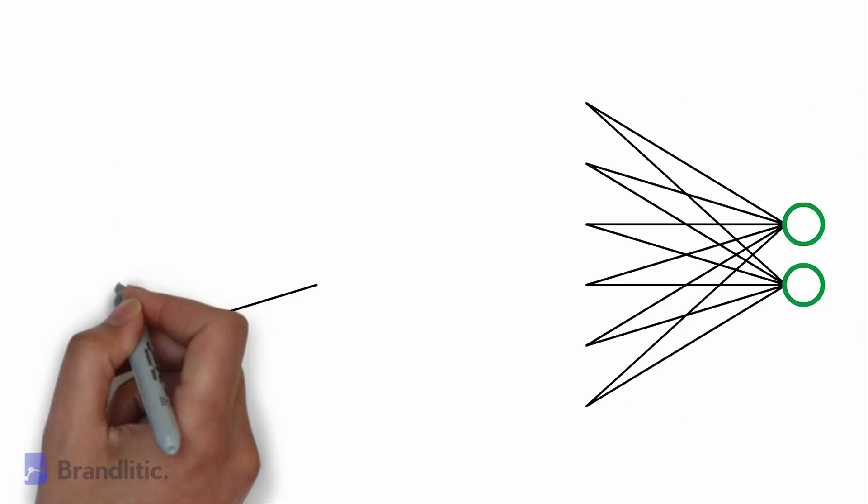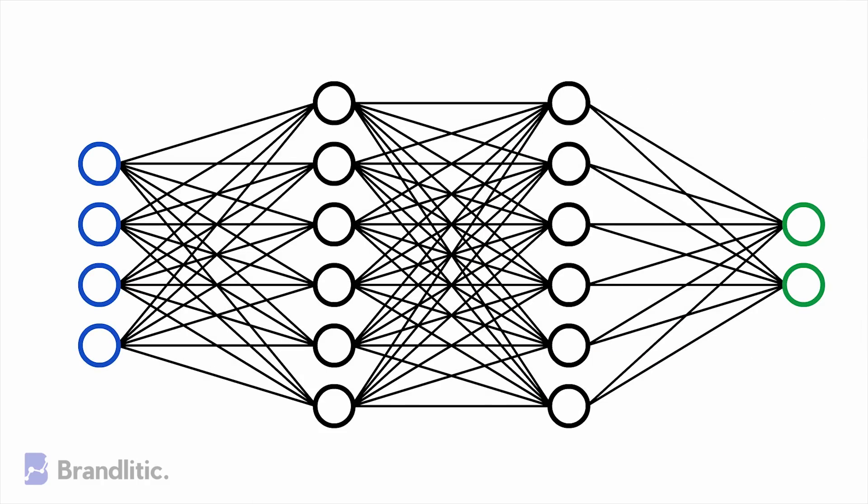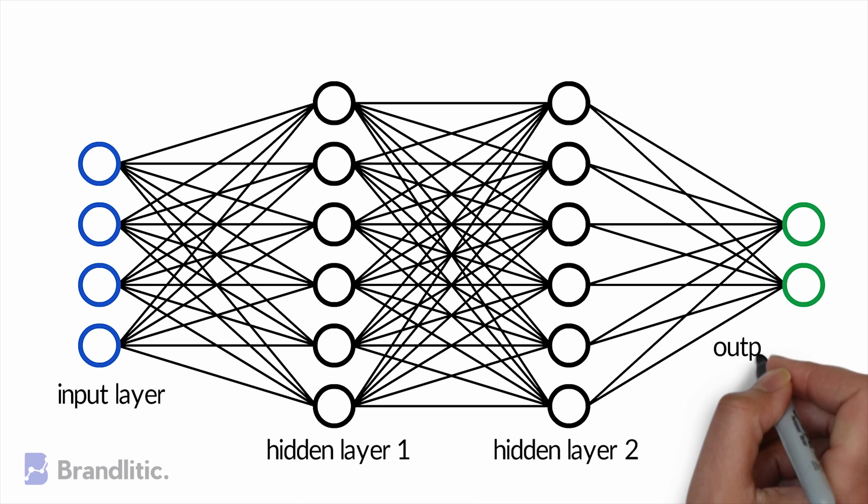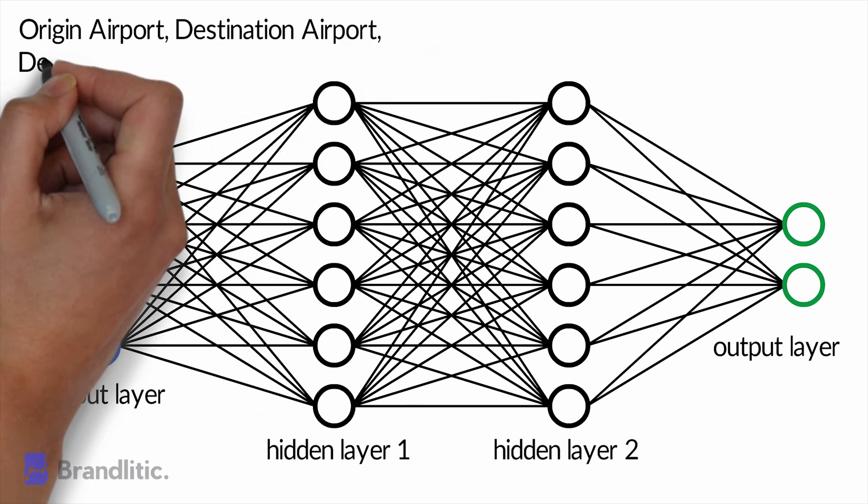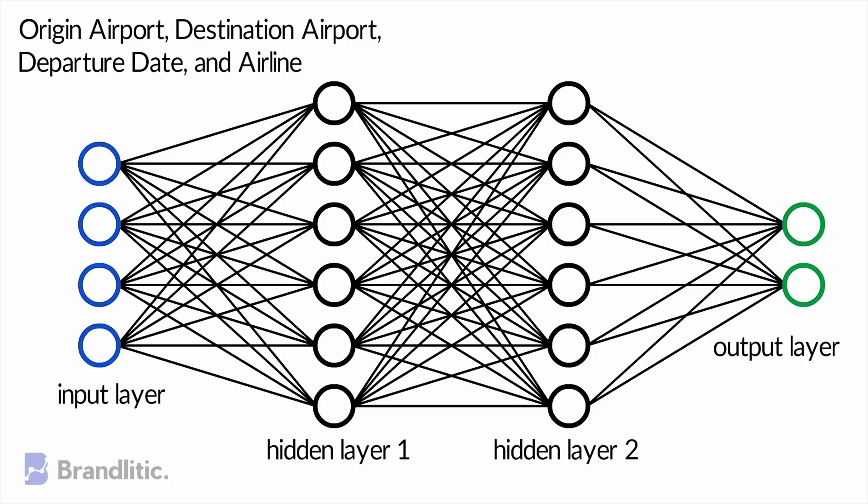So just as a recap, a neural network has three ingredients to it. First, the input layer which receives the input, which in our case is the four neurons in the input layer: Origin Airport, Destination Airport, Departure Date, and Airline.